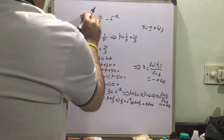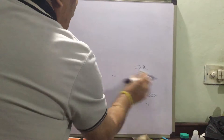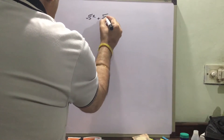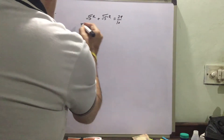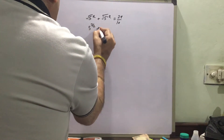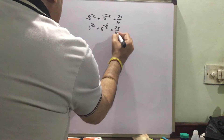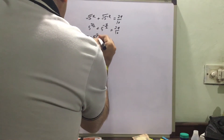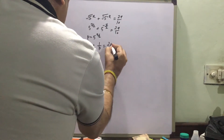Now we will see another exponential equation. In this case: √5 raised to the power x, plus √5 raised to the power minus x, equal to 29/10. Or we can write it as 5 raised to the power x/2, plus 5 raised to the power minus x/2, equal to 29/10. Let us assume that p is equal to 5 raised to the power x/2. So our equation becomes p plus 1 upon p equal to 29/10.